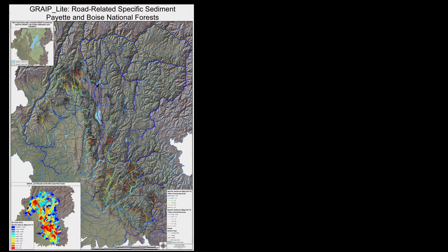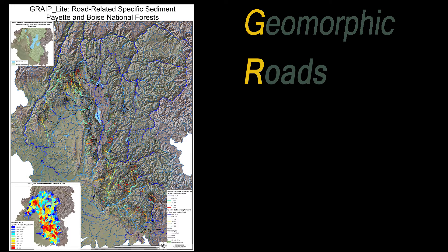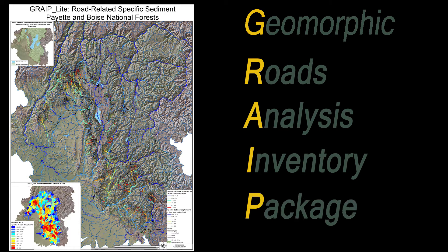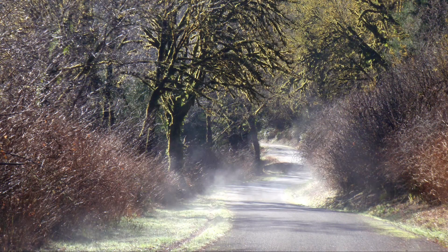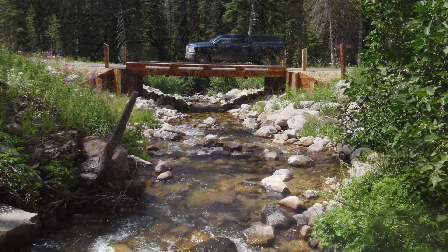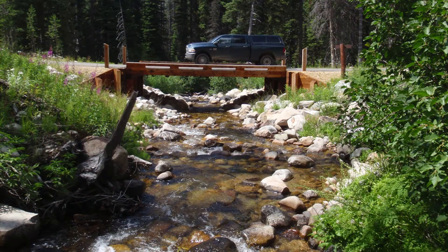The tool we're using is called GRAIP, which stands for Geomorphic Roads Analysis and Inventory Package. It's a suite of tools that we use to analyze the road system in a number of different ways. Using that we can do whole landscapes at a time, 800 miles of road and more, and see where the sediment comes from in the road system and moves down into the stream network and how it moves through the stream network and accumulates or dilutes.